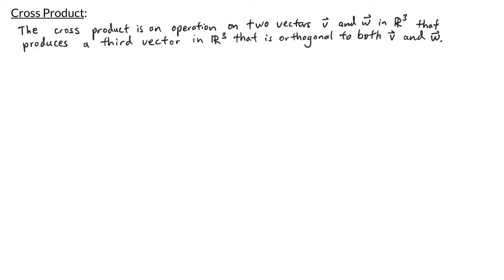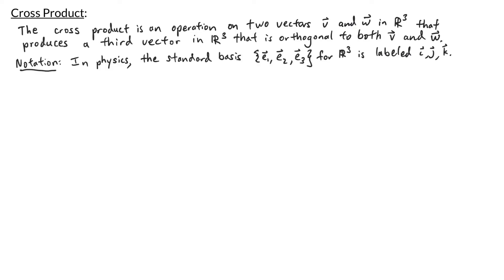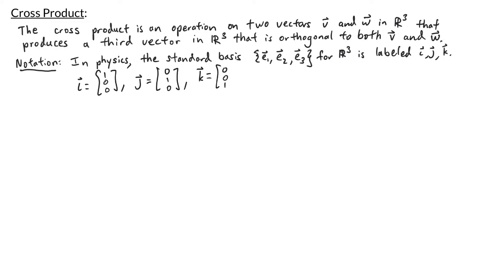Before we define the cross product of two vectors we need to go over some notation. In physics the standard basis e1, e2, e3 is labeled as i, j, and k. So i is the vector (1,0,0), j is the vector (0,1,0), and k is the vector (0,0,1).